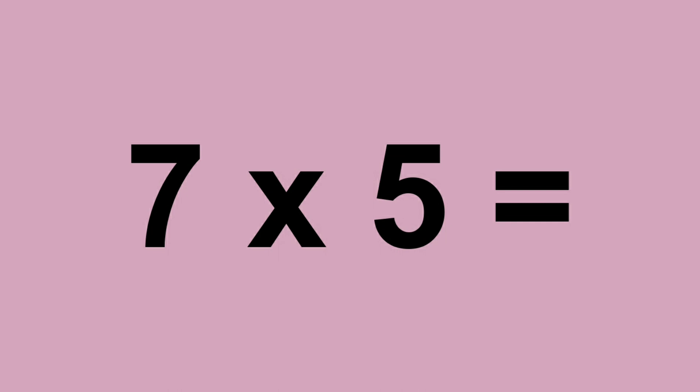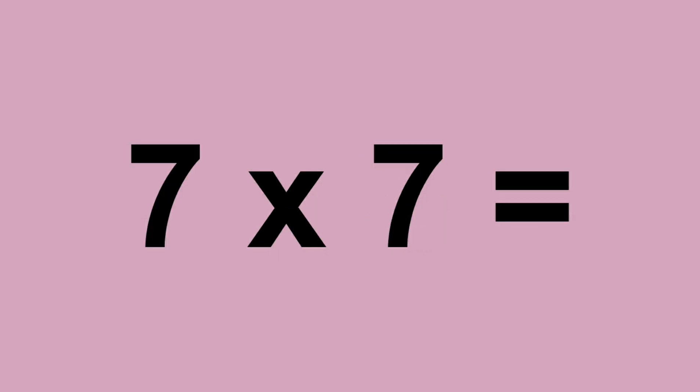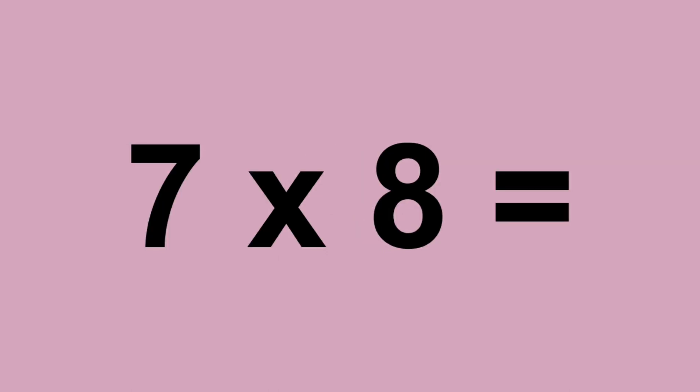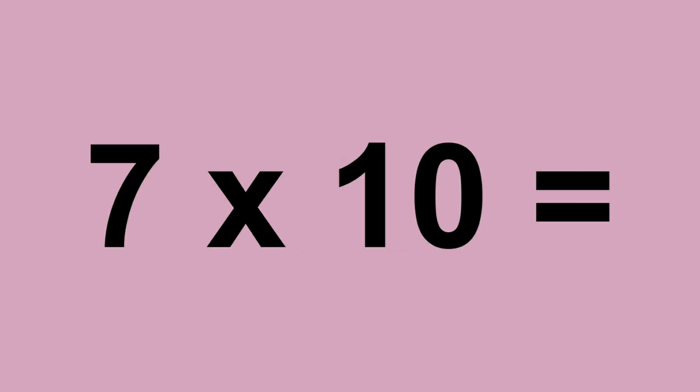7 times 5 equals 35. 7 times 6 equals 42. 7 times 7 equals 49. 7 times 8 equals 56. 7 times 9 equals 63. 7 times 10 equals 70.